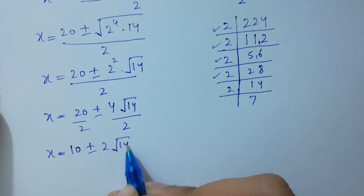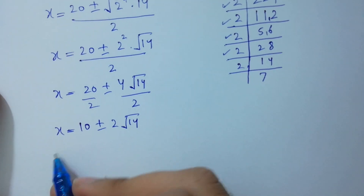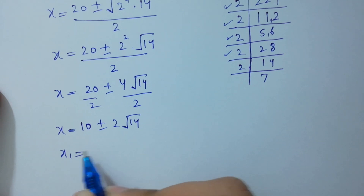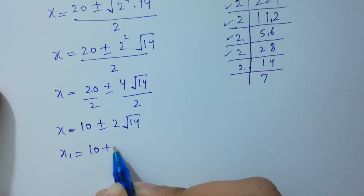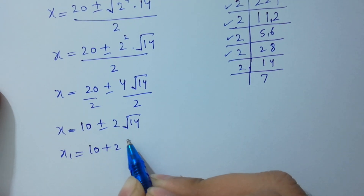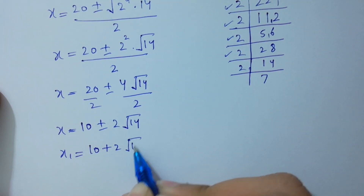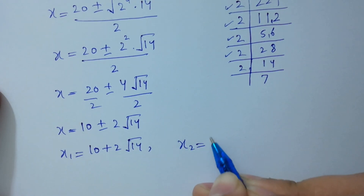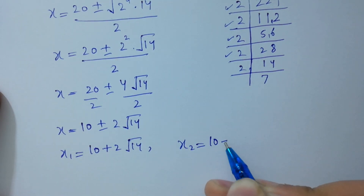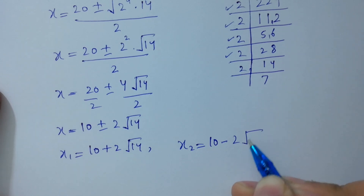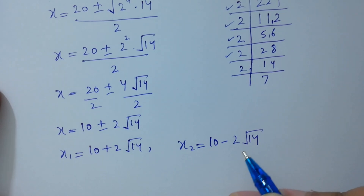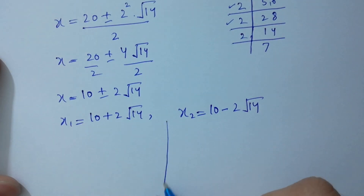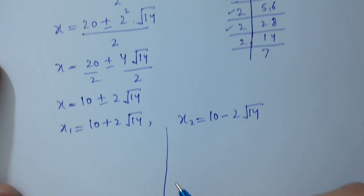So x1 equals 10 plus 2 square root of 14, and x2 equals 10 minus 2 square root of 14.